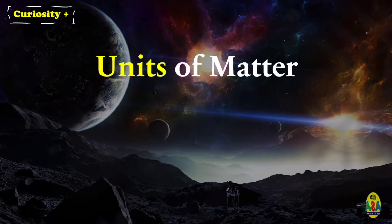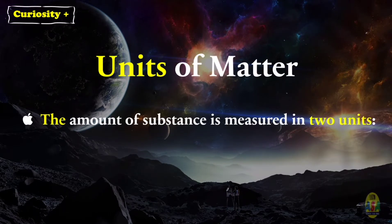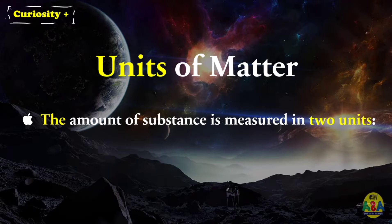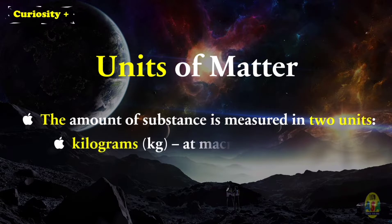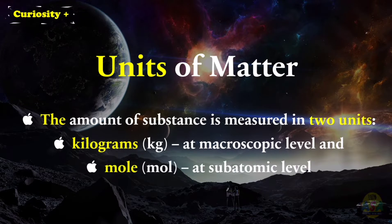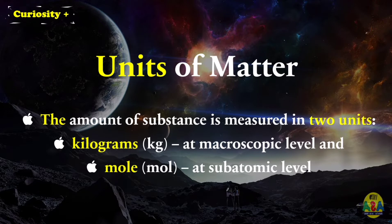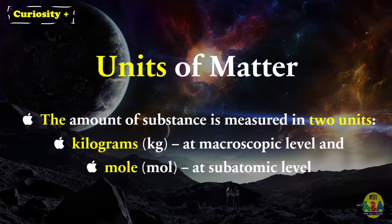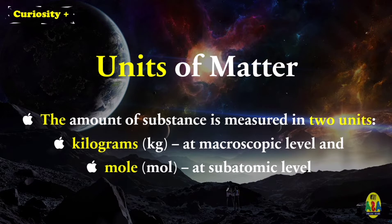Units of matter. The amount of substance is usually measured in two units. One is kilograms, used at the macroscopic level, and the second is mole, used at the subatomic level to know the number of particles in a substance. One mole of any substance contains an equal number of particles, and that is equal to Avogadro's number.